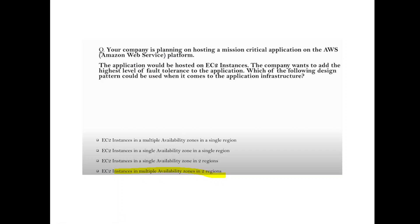Question (indirect): Your company is hosting a mission-critical application on AWS EC2. The company wants the highest level of fault tolerance. Which design pattern should be used? Answer: Deploy instances in multiple Availability Zones in two regions.